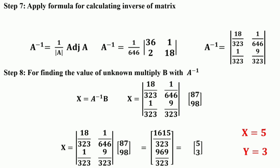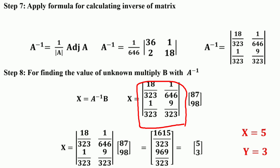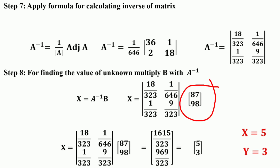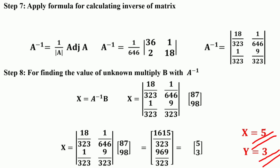After finding the inverse, our equation for finding the unknowns is X = A⁻¹B. To find the values of x and y, we multiply the inverse of A by the constant matrix [87; 98]. Multiplying these two matrices gives [5; 3]. Thus x = 5 and y = 3.